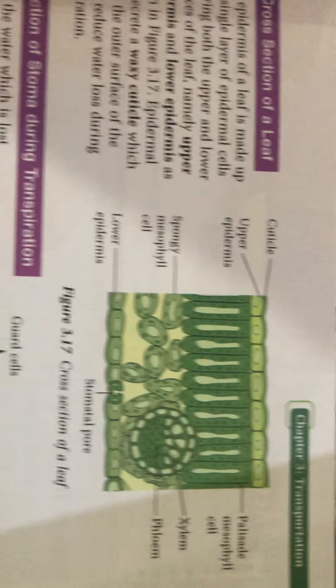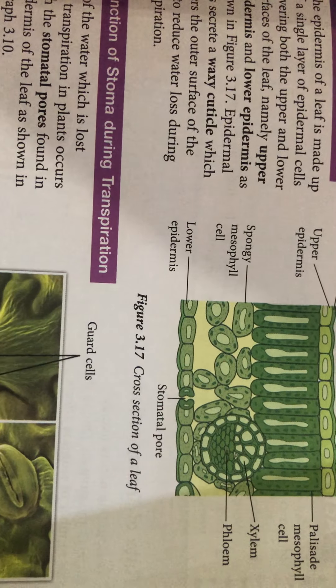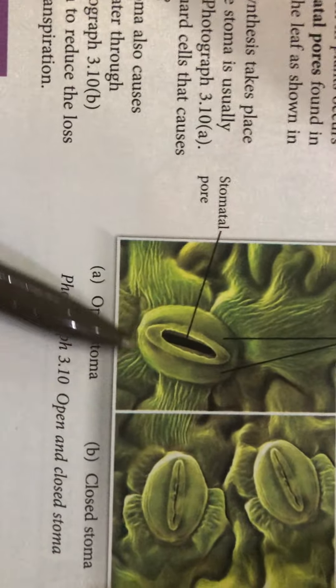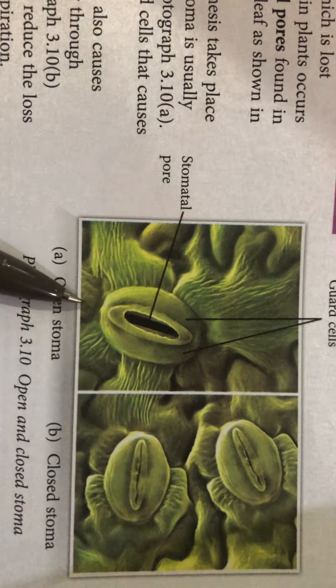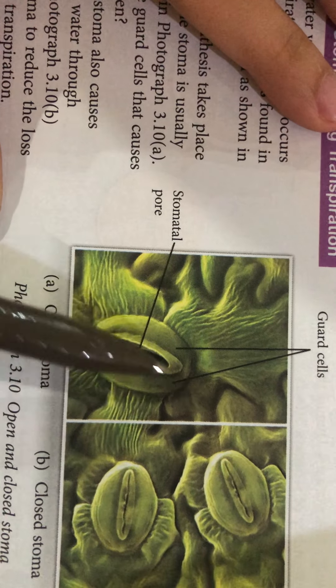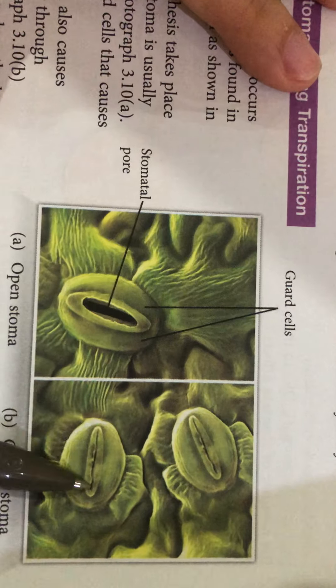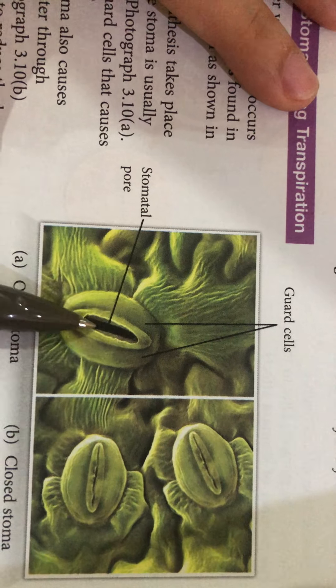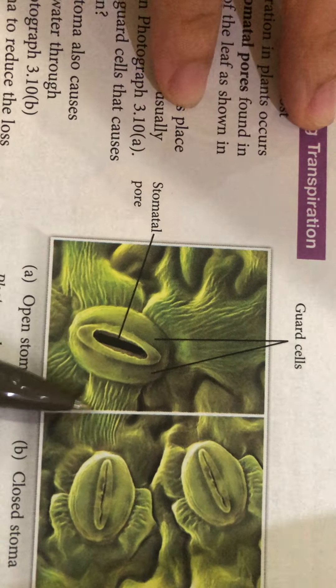First we have to know what is stomata. So zoom into the microscope. This one I shown in class before. This is stomata. Stoma is the opening and this is guard cell. The stomata is closed. The stomata is open. So besides you have two guard cells.